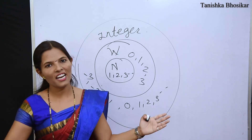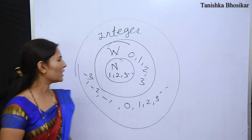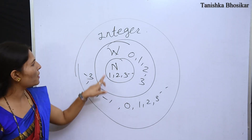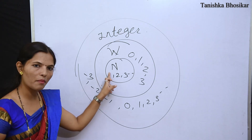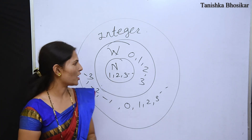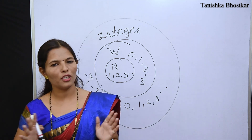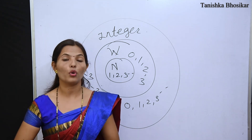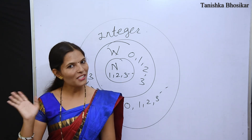Just as in geography there is a village, taluka, district, state, and country — in mathematics there is natural number, whole number, and integer. Natural number is inside whole number, and whole number is inside integer. This is the correlation. This is a good topic — number system and how to show integers on the number line. So bye-bye students.